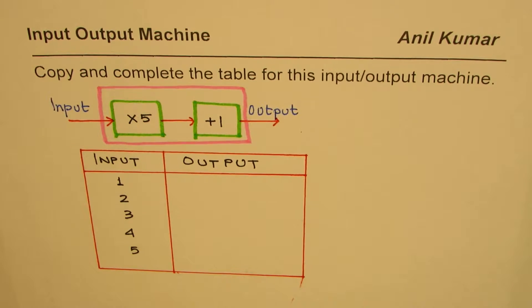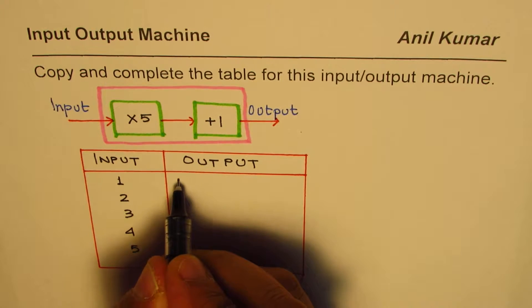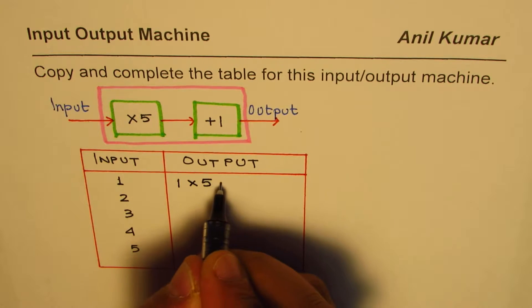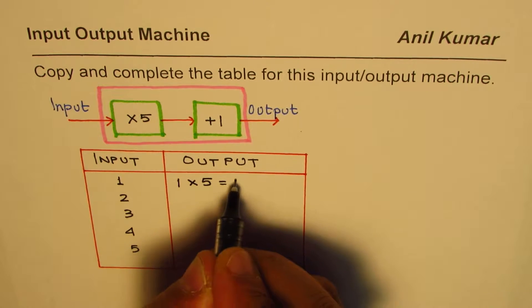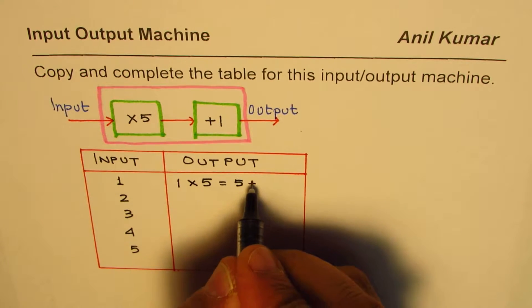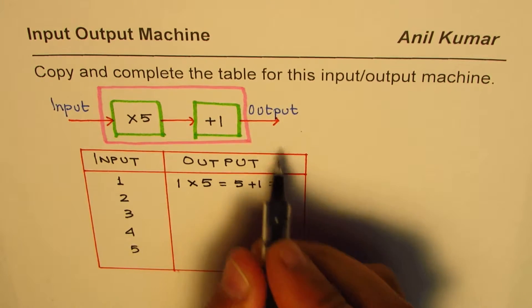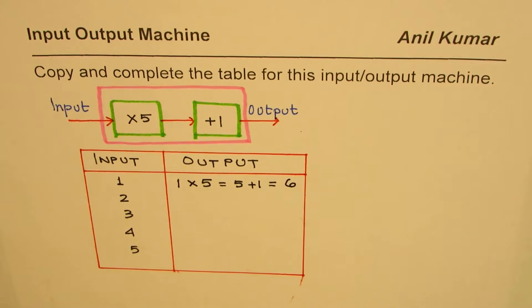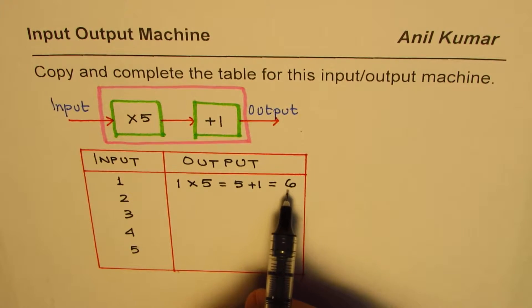You can now pause the video, answer, and then look into my suggestions. So let's do it. We have an input of 1. What is the machine doing? It is multiplying that number by 5. So 1 times 5 is 5, and then you add 1. So you get an output which equals 5 plus 1, which is 6.